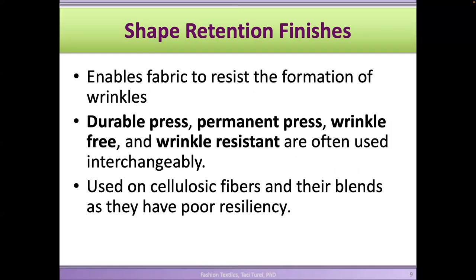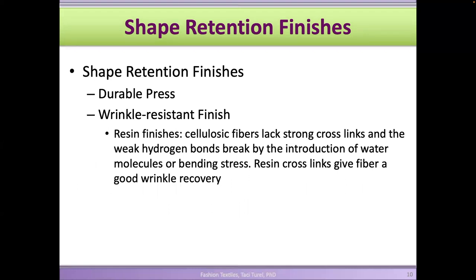There are many different terms used for wrinkle-resistant finishes: durable press, permanent press, wrinkle-free, wrinkle-resistant fabric. The purpose of all of those is to make it easier to iron the fabric, or that you don't require ironing at all. Cellulosic fibers especially wrinkle a lot, so most cellulosic fibers get treated with something to make them wrinkle-free or wrinkle-resistant. With a wrinkle-resistant finish, we use resin and cellulosic fibers get cross-links so that the molecular chains don't move around and cause wrinkling.